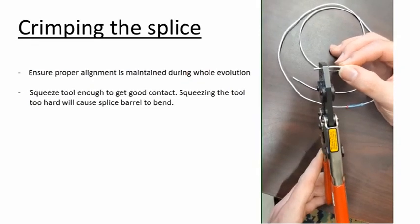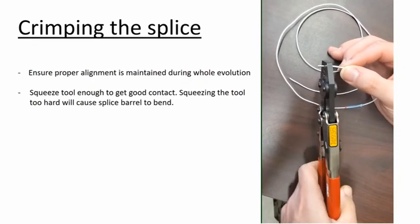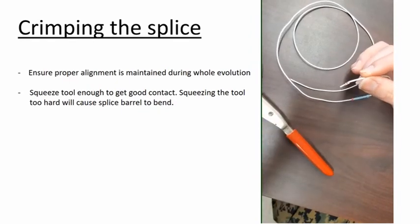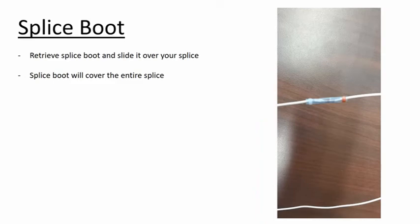Repeat this step for the other side of the wire. Slide your splice boot over the splice and you will now be ready to melt it down.